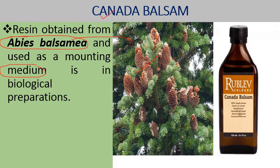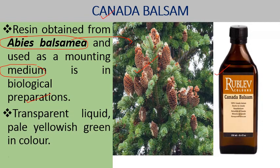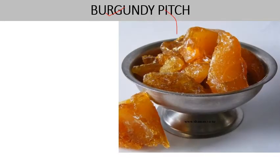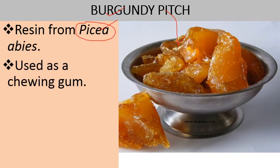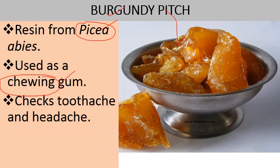Canada Balsam is obtained from Abies balsamea and is a transparent, pale yellowish-green liquid used as an adhesive and mounting medium to make permanent slides. Next is Burgundy pitch, again a resin-like substance obtained from Picea abies. It is used for the preparation of chewing gum and also helps to check toothache and headache.